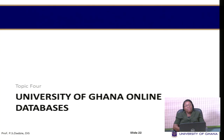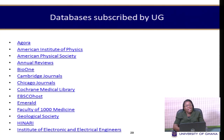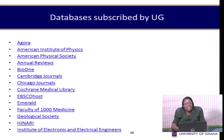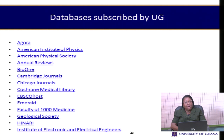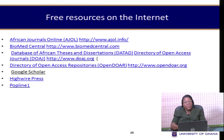Let's look at examples of University of Ghana online databases. These include Agora, American Institute of Physics, Bio One, and others. If you are on campus, you do not need a password to access these databases—going to the library website and clicking on any listed database launches you straight into it for full-text searching. Free databases on the internet include African Journals Online, Biomed Central, Google Scholar, High Wire Press, and Popline One.